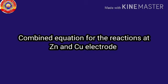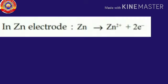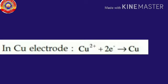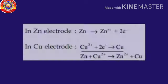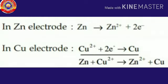Let's write the combined equation for the reactions taking place at zinc and copper electrodes. The reaction at zinc electrode is given by Zn gives Zn2+ plus 2e-. And in copper electrode, the reaction taking place will be Cu2+ plus 2e- gives copper. The overall reaction for the above reactions can be written as Zn plus Cu2+ gives Zn2+ plus Cu. Both oxidation and reduction take place simultaneously.